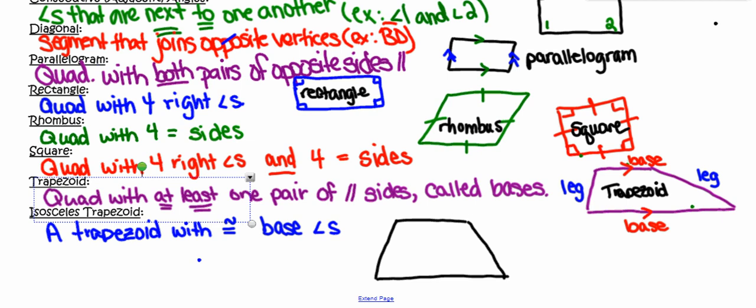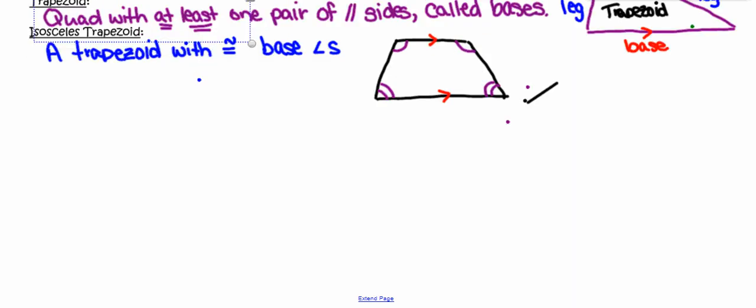So here are my bases that are parallel. My base angles are going to be the angles that are formed where the leg meets the base. So I have one pair of congruent base angles up here where that top base meets the leg. I have a second pair of congruent base angles down at the bottom where the leg meets that second base. And again I'm going to label this bugger as the isosceles trapezoid.